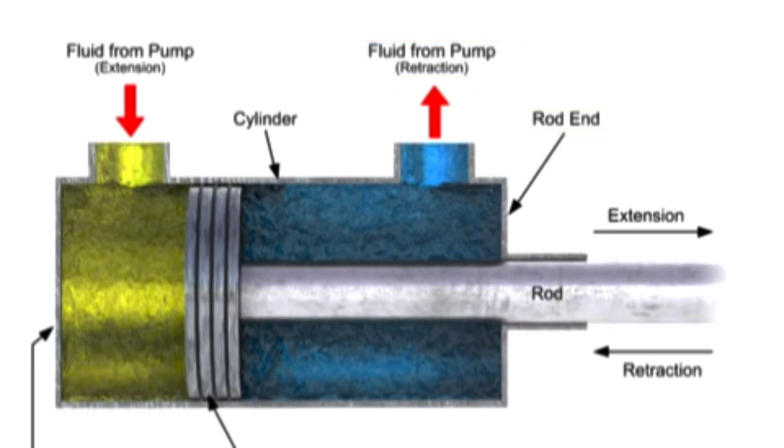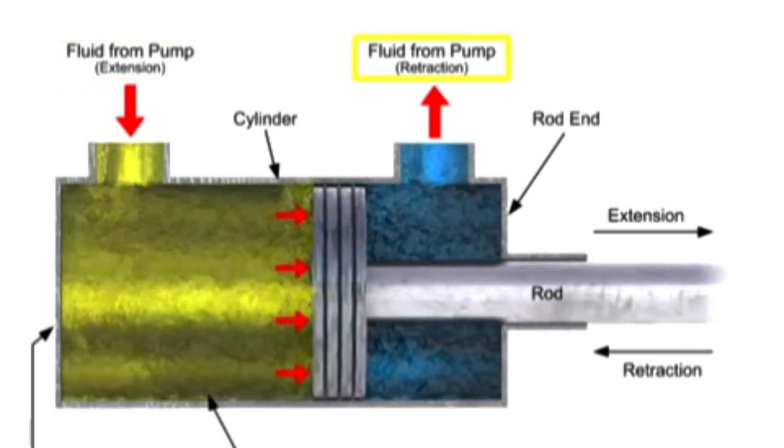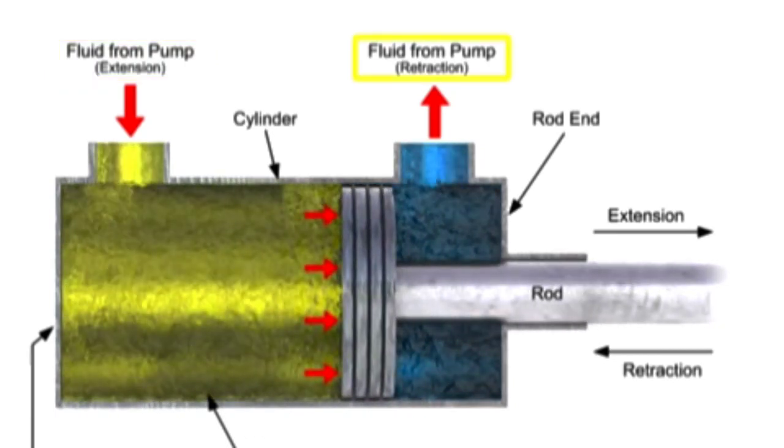A directional control valve sends fluid through the blind end port, while venting fluid out the rod end port back to the tank. Pressure builds up and generates a force on the piston, causing the extension stroke.